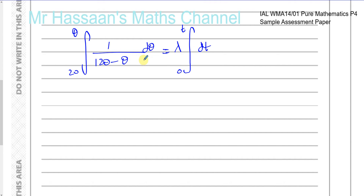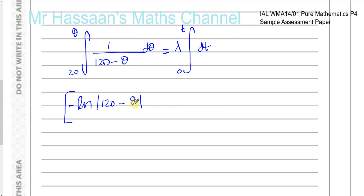This side is going to be integrated with respect to theta. When you integrate 1 over something — like 1 over (120 minus theta) — it's going to be in the form of the ln of that thing. So you get ln of the modulus of (120 minus theta). You then divide by the differential of what's inside the function, which is minus 1. If you differentiate (120 minus theta) with respect to theta, you get minus 1. So dividing by minus 1 gives you minus ln of (120 minus theta), between the limits of theta and 20. On the right side, you're left with lambda times t, because integrating 1 with respect to t gives t, with limits t and 0.